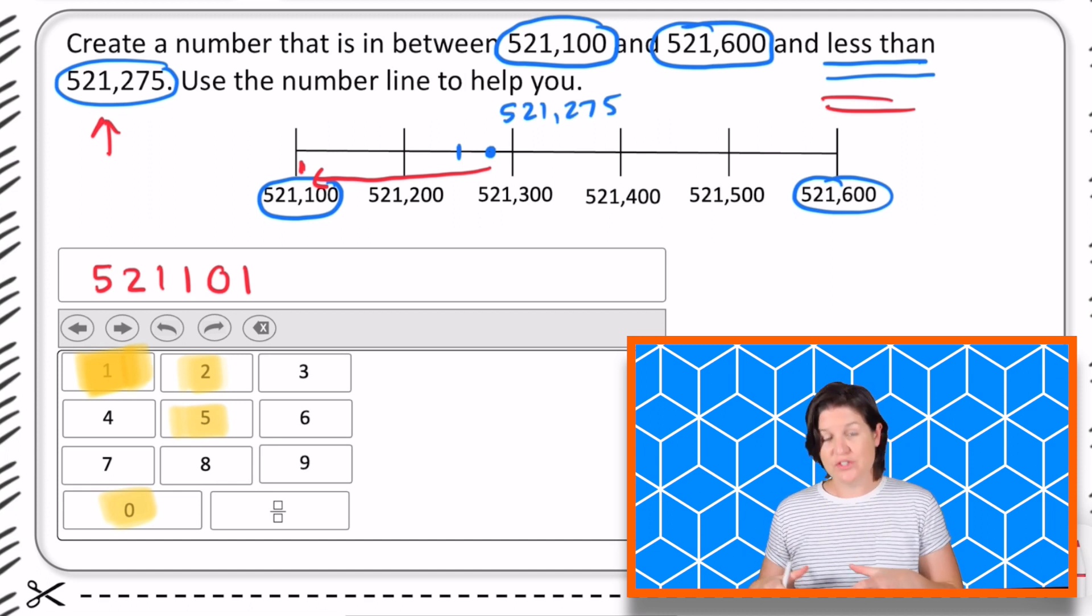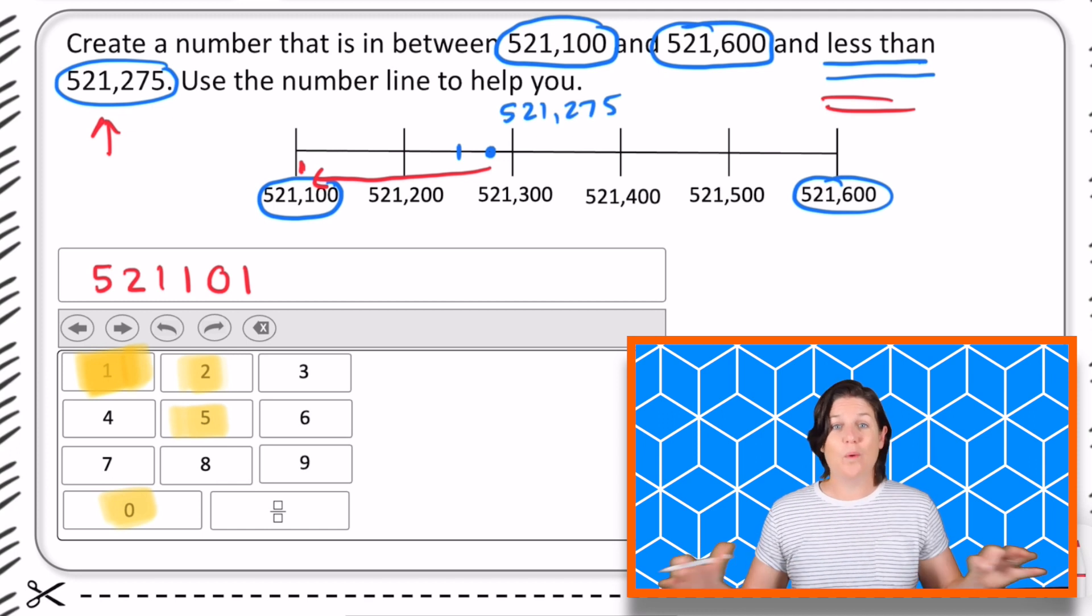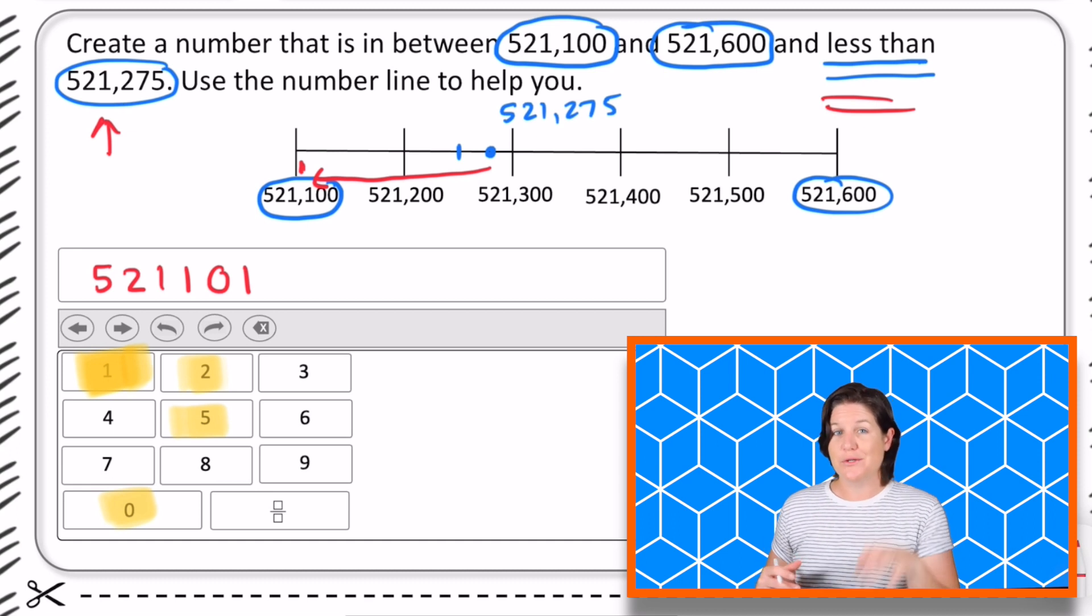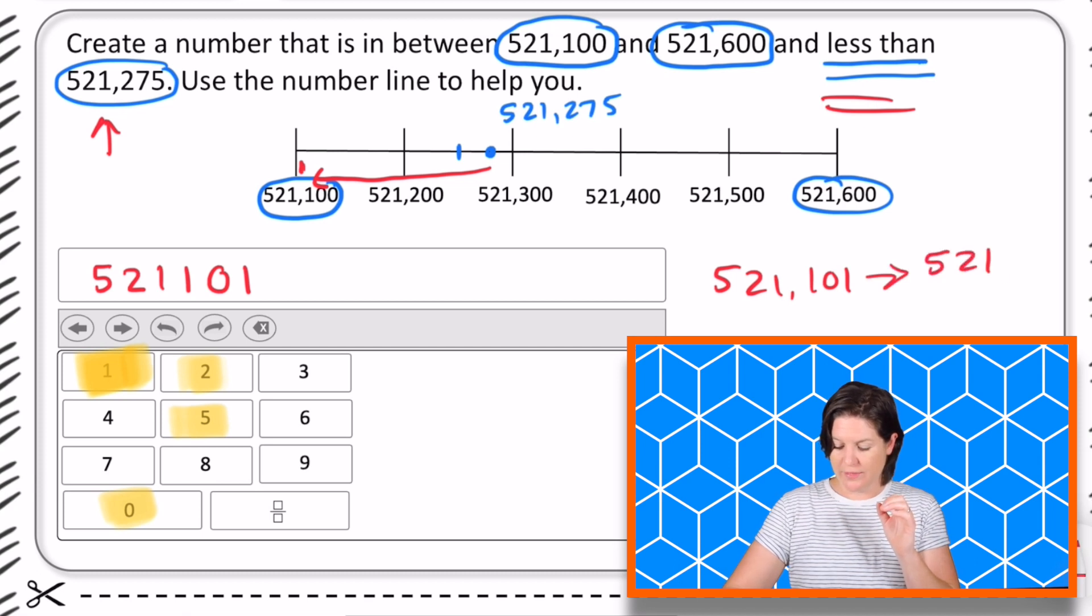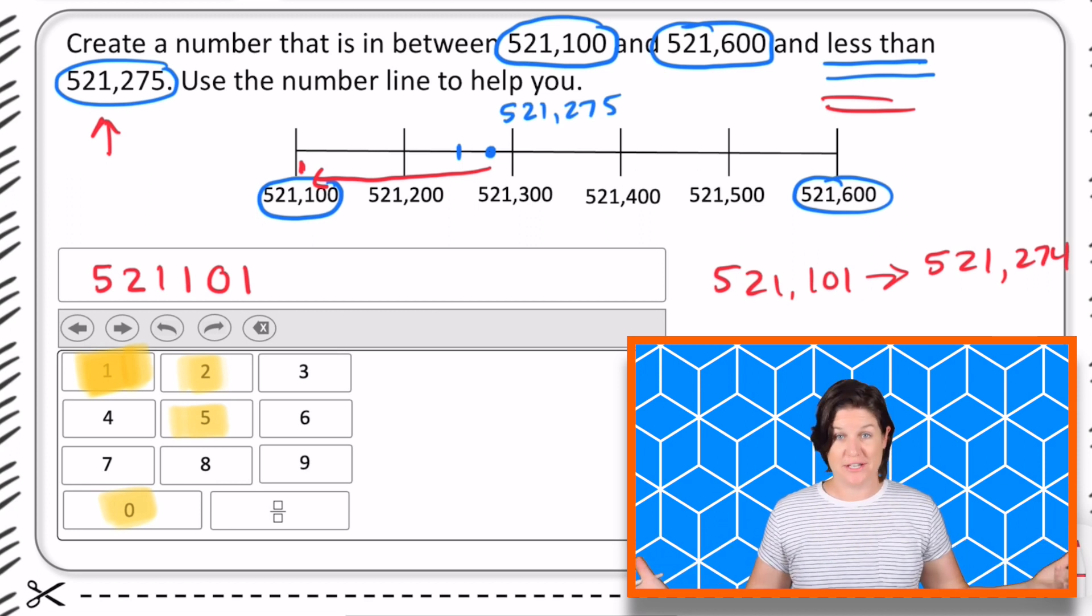So just be careful again. To clarify, 521,101 is not the one and only answer. There's a bunch of answer choices. Anything between 521,101 all the way to 521,274, anything in that range of numbers would be a correct answer here.